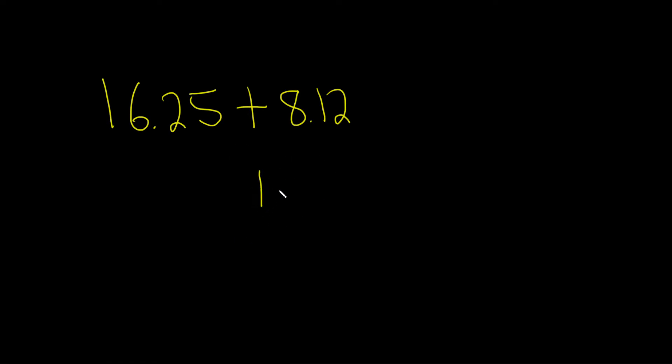So like this, 16.25 and the 8.12, and then you want to put the decimal point here. You want to make sure that it actually lines up. Then you draw a line, then you put a plus sign.